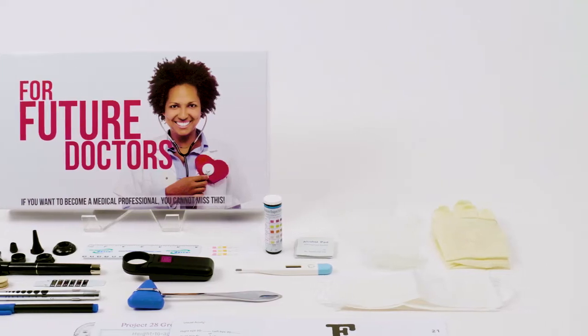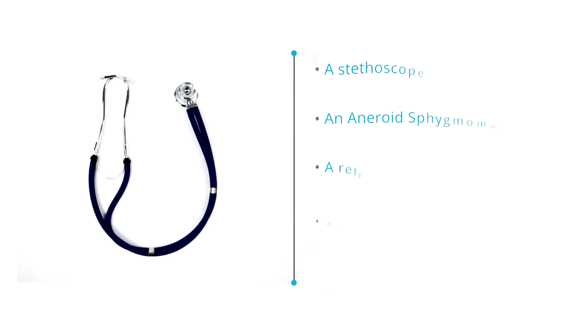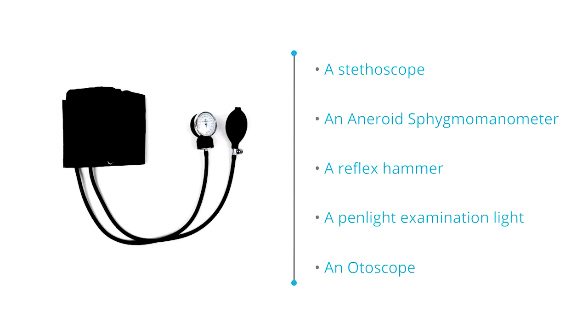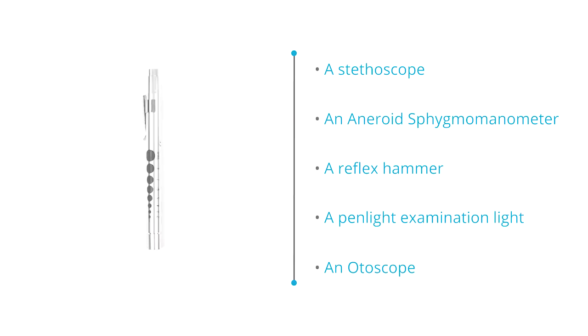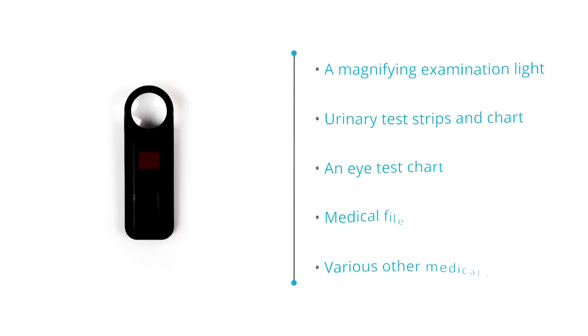The Apprentice Doctor for Future Doctors Foundation Kit contains a stethoscope, an aneroid sphygmomanometer, a reflex hammer, a pen light examination light, an otoscope, and a magnifying examination light.